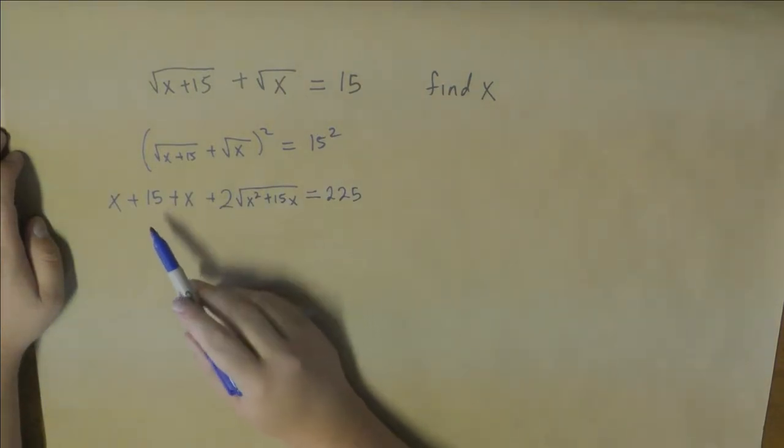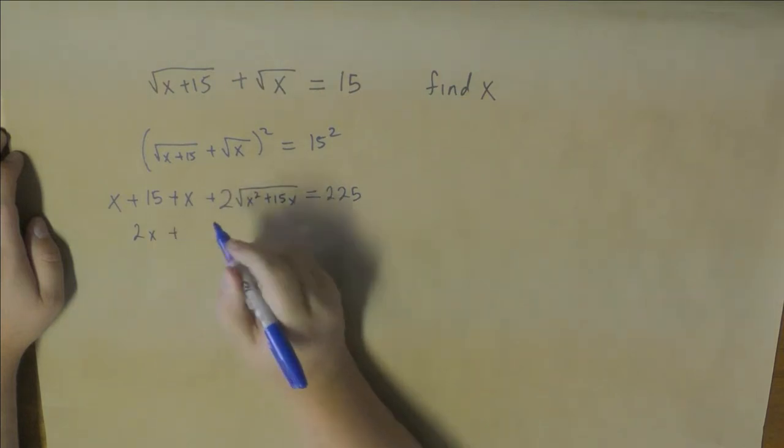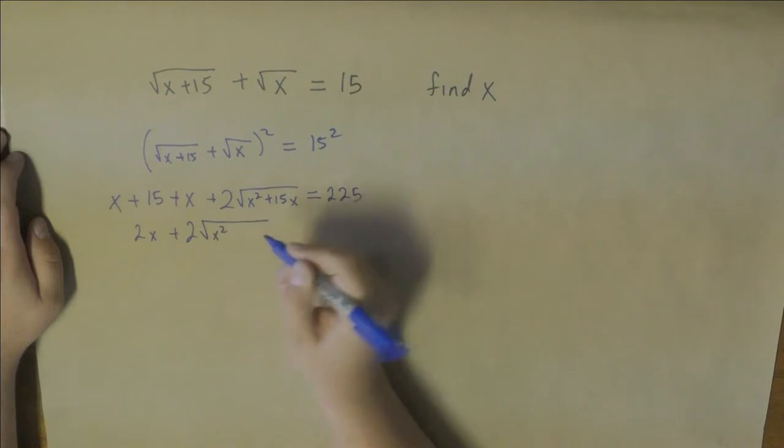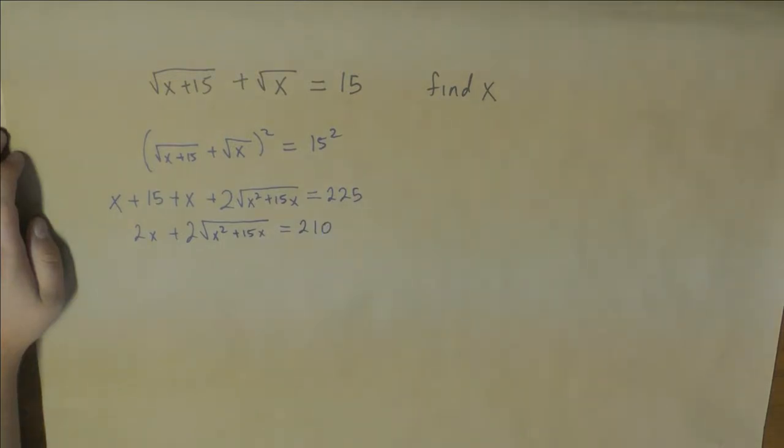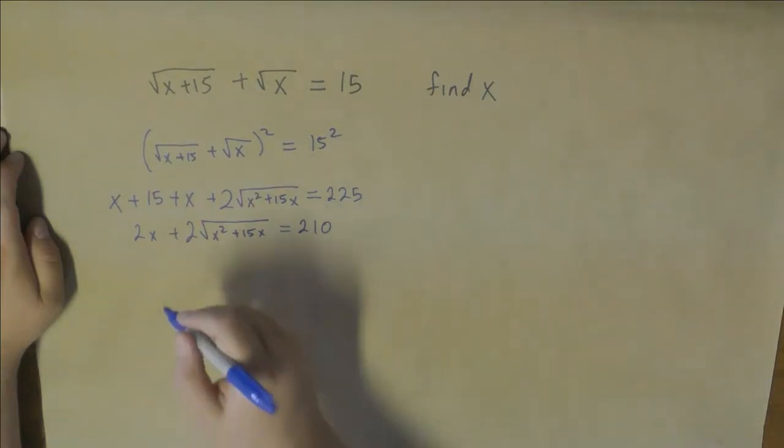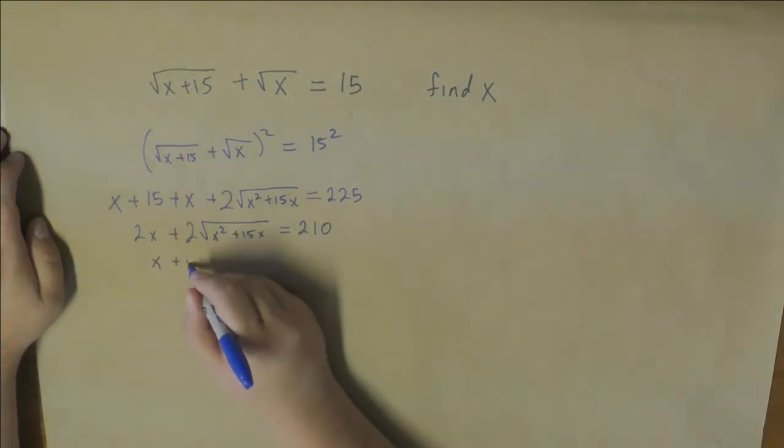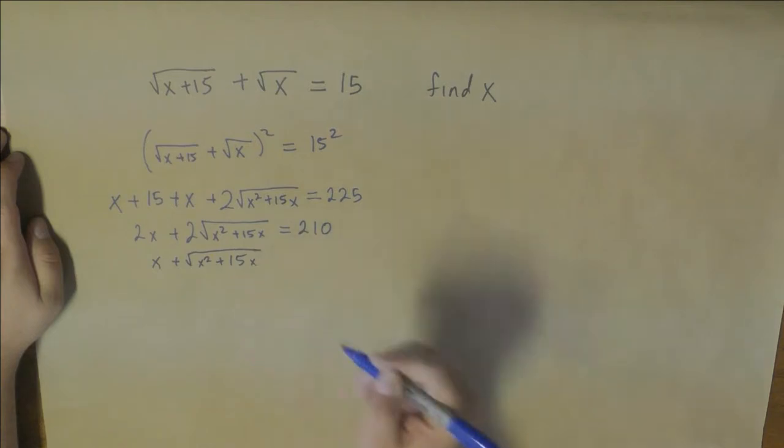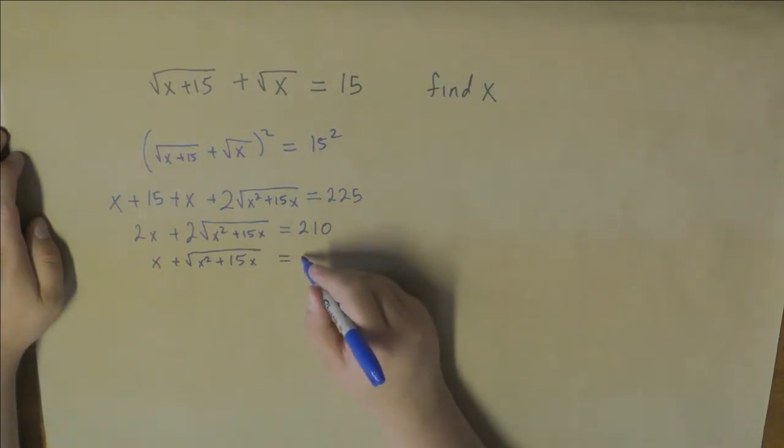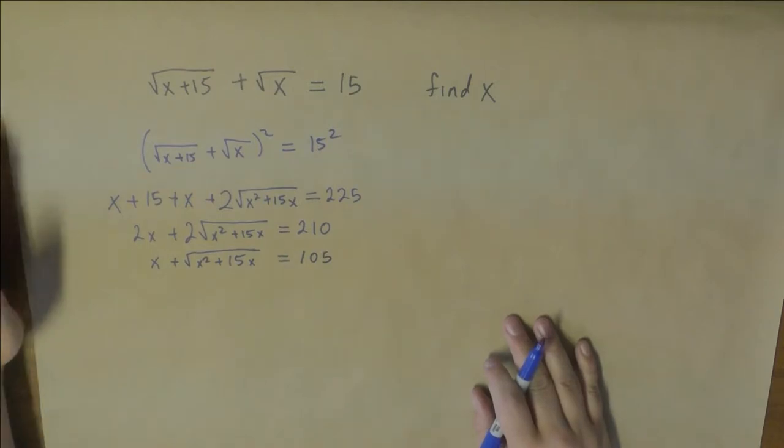And that's going to be equal to 225 because that's 15 squared. We collect this together and subtract the 15 from both sides. So we end up with 2x plus 2 times the square root of x squared plus 15x equals 210. We've got a factor of 2 on the left-hand side, so we can divide both sides by 2. Then we get x plus the square root of x squared plus 15x, and that's going to be equal to 105.